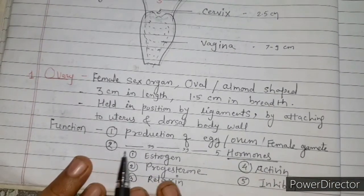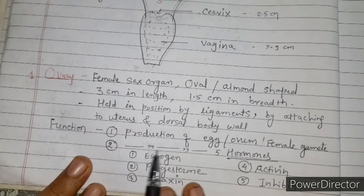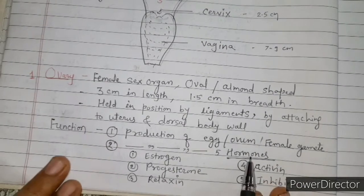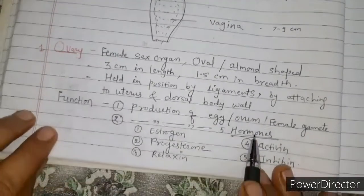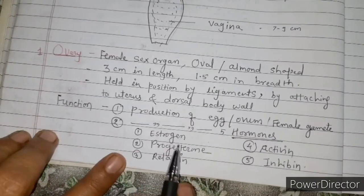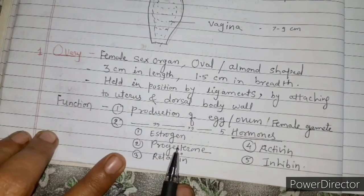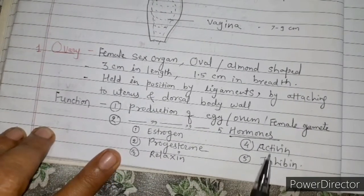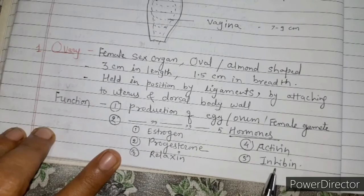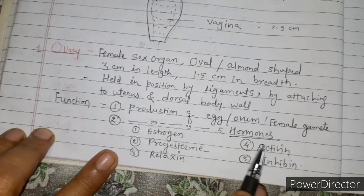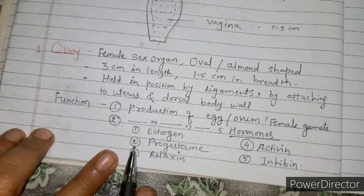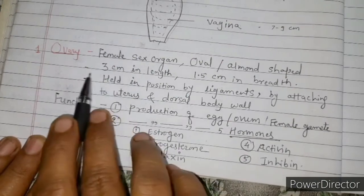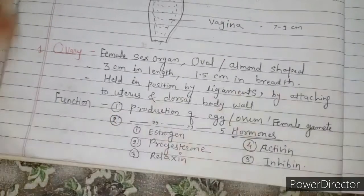The second function of the ovary is the production of five types of hormones: estrogen, progesterone, relaxin, activin, and inhibin. These are the five types of female sex hormones secreted by the ovary.